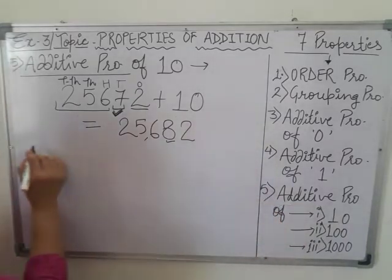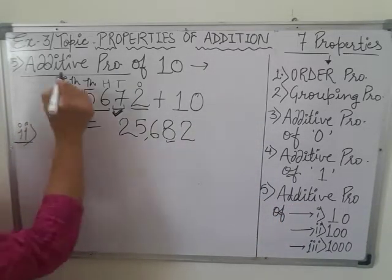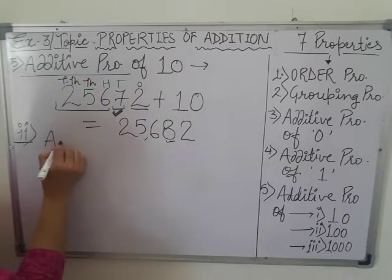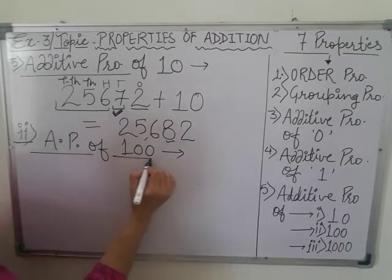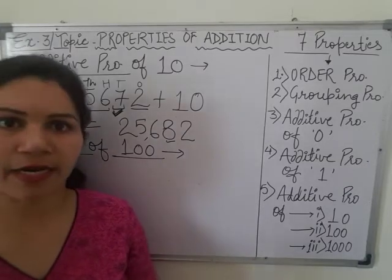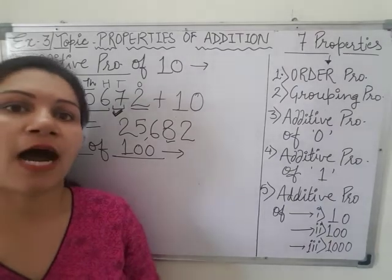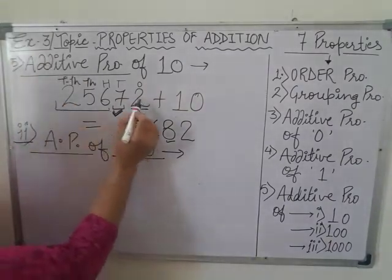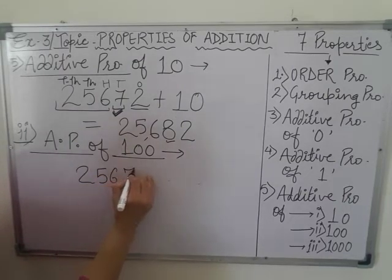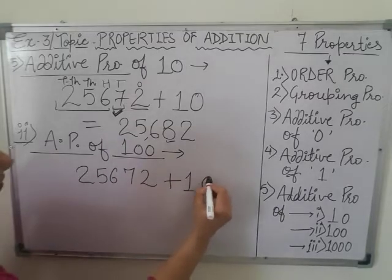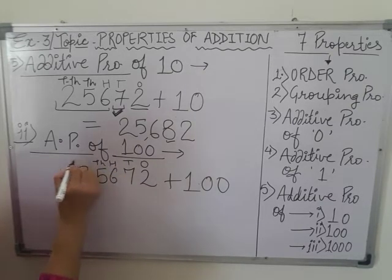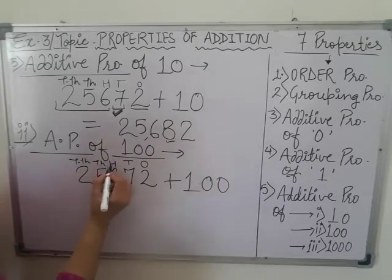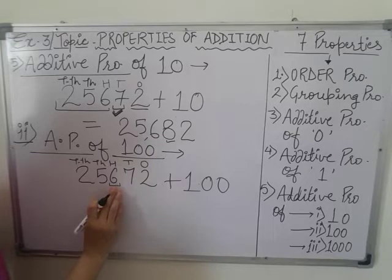Similarly, the second property is additive property of 100. According to this property, if we are having any large number and we are adding 100 to it, then the change only in 100's place. Here, we are having the same number 25,672 and we are adding 100 to it, just writing the places of them: 1's, 10's, 100, 1000, 10,000. So which digit is on 100's place? You can see 6 is on 100's place.